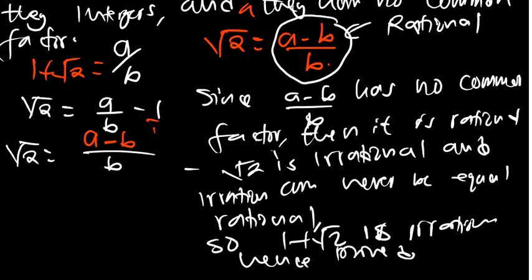We proved using contradiction: we assumed 1 plus the square root of 2 was rational, but since the square root of 2 is irrational, and irrational can never equal rational, the assumption is false. This is how you prove something using the contradiction method.